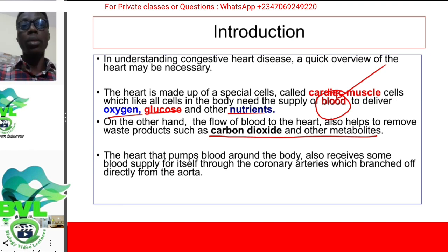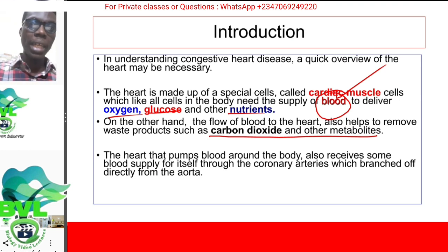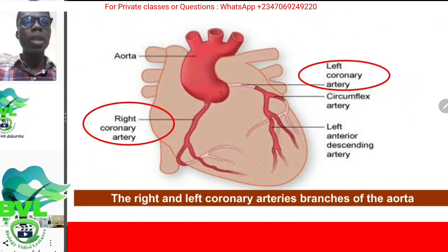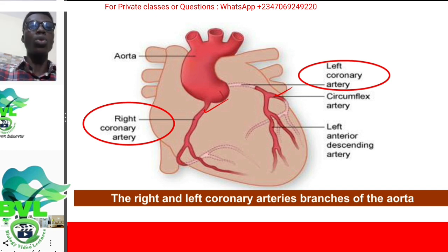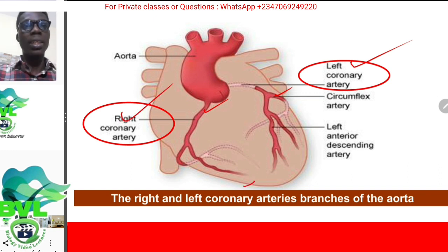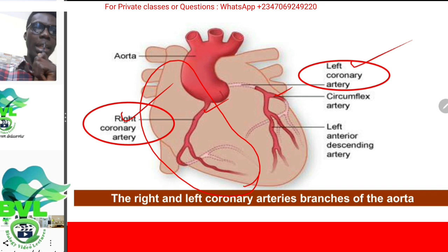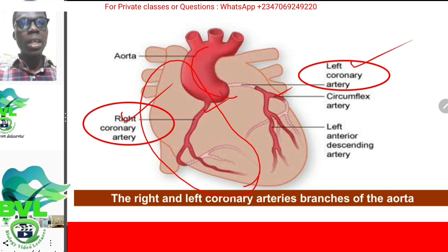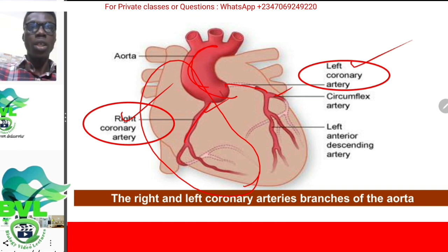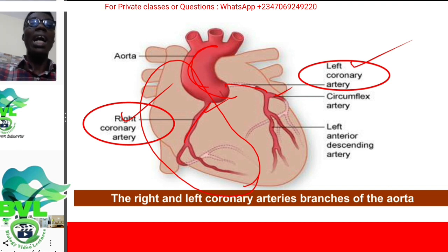Now, this heart that pumps continuously also needs to supply itself. It doesn't do it by absorbing — that's not how it works. It gets blood supply by blood vessels called coronary arteries. We have not just two coronary arteries; we have more. I picked out the left coronary artery and the right coronary artery, supplying the different parts of the heart. As blood comes out of the aorta, these and other coronary arteries branch out to supply the whole wall of the heart.